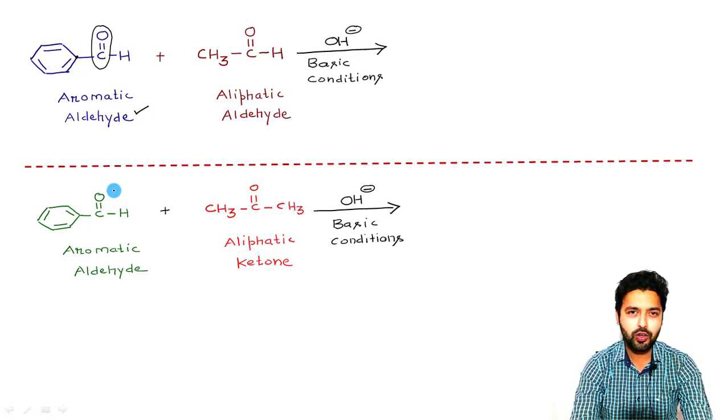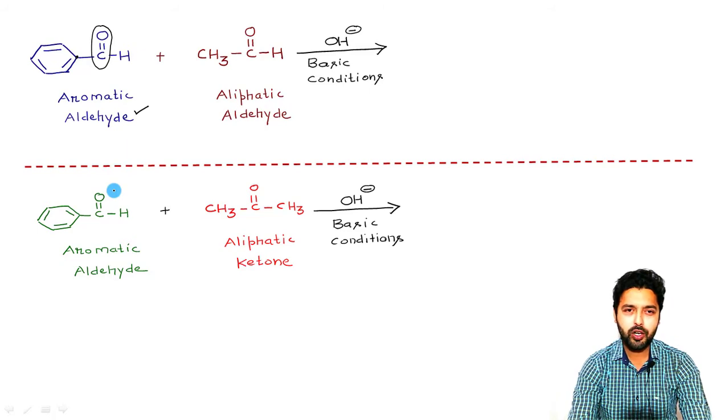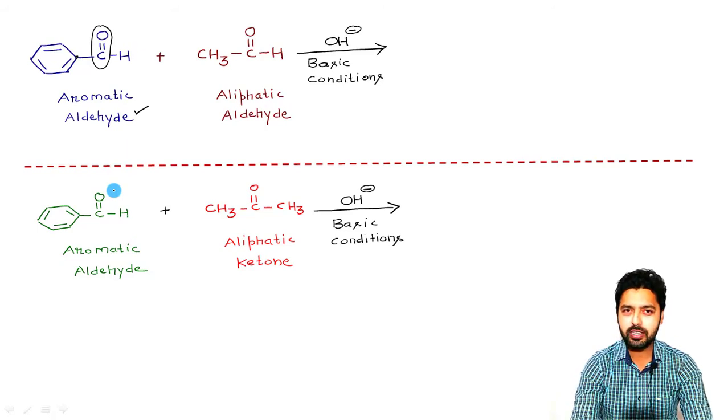As far as the Claisen-Schmidt reaction is concerned, out of the two reactant molecules, it is mandatory that one of the reactant molecules must be devoid of alpha hydrogen atoms. One reactant molecule should be selected in such a way that it does not contain any alpha hydrogen.